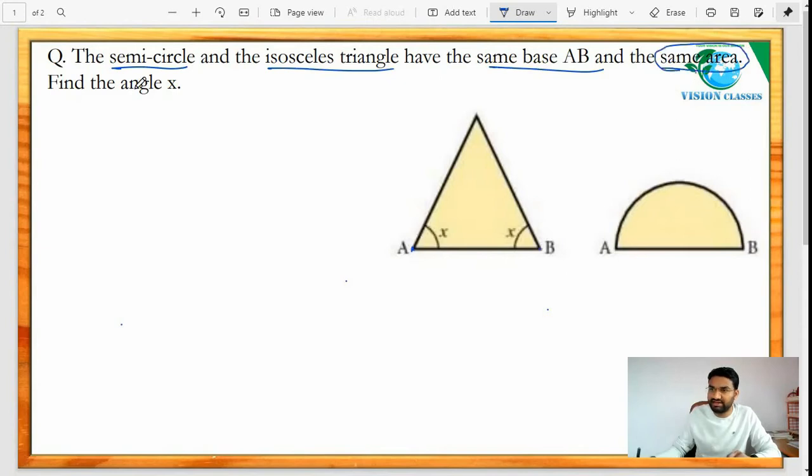...so this AB is the same base and the same area. Find the angle x. So we have to find out this angle x. Now I hope you know the basic part that area of triangle, area of semicircle, and so on. So here the condition is given that for the triangle and semicircle, the same base is there, right? AB is the same base...